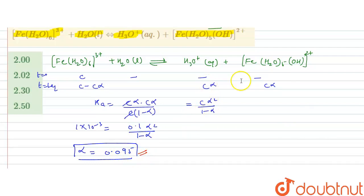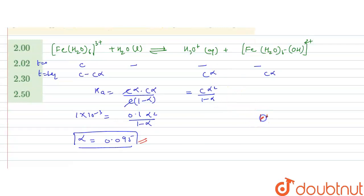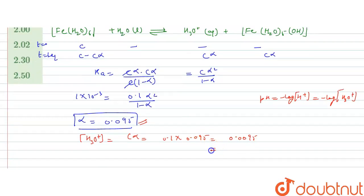Now, we have to calculate the pH of the solution and pH is equal to minus log H+ concentration or we can say minus log H3O+ concentration, hydronium ion. So, now the H3O+ concentration that is C alpha. So, it will be concentration is 0.1 into alpha that is 0.095. So, this gives us 0.0095 or we can write it as 9.5 into 10 raised to the power minus 3. So, this will be 95 into 10 raised to the power minus 4.